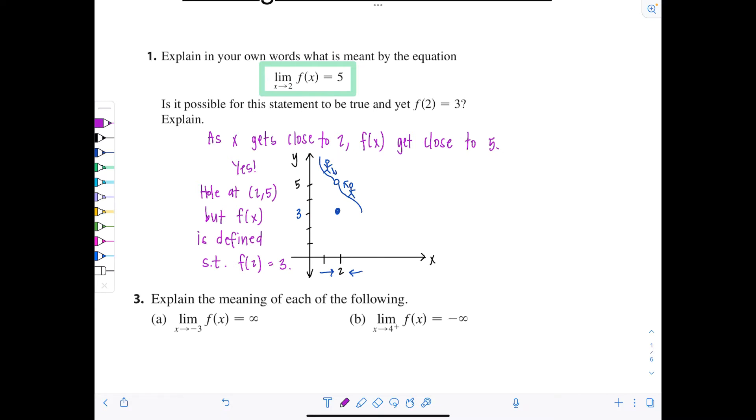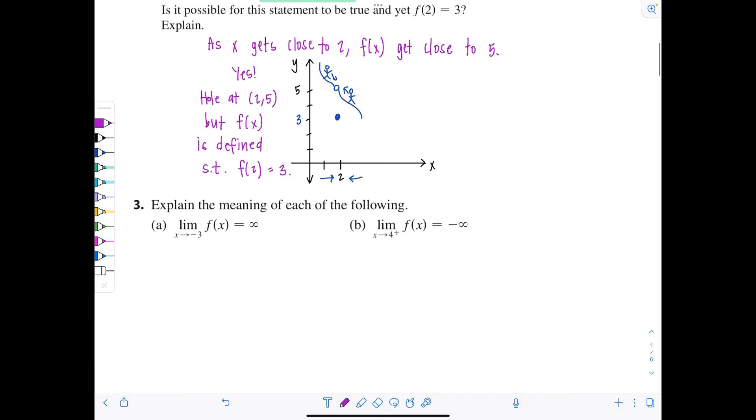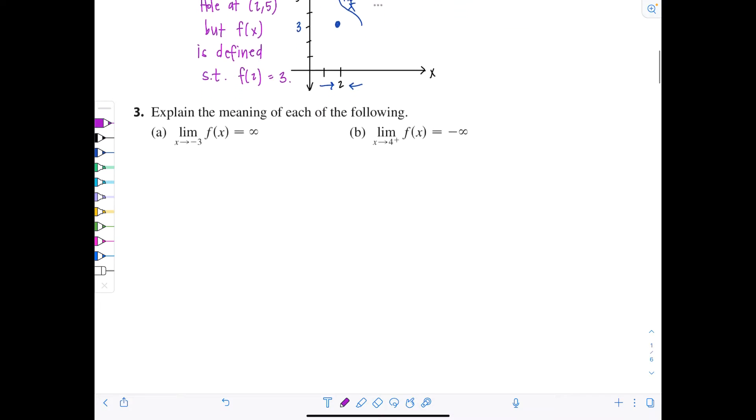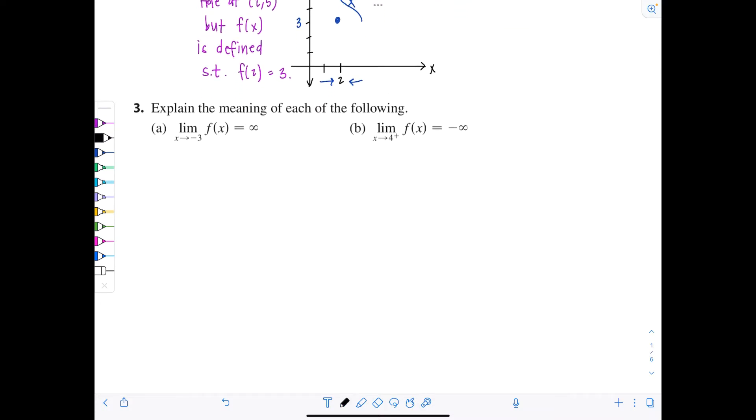Next exercise, explain the meaning of each of the following. So first one, the limit as x approaches negative 3 of f of x equals positive infinity. So notice in this case, they didn't tell us from which side we were approaching negative 3. So what that means is as you approach from either side, left or right, here's negative 3, the graph approaches positive infinity.